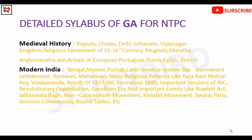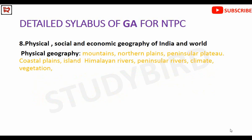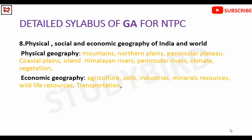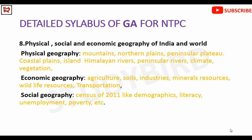You will also cover the Quit India Movement. Next is the Physical, Social, and Economic Geography of India: physical features — mountains, northern plains, peninsular plateau, coastal plains, islands, Himalayan and peninsular rivers, climate, vegetation — and economic geography covering soils, industries, mineral resources, wildlife resources, transportation, waterways, airways, and railways.